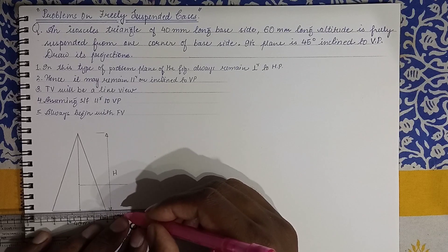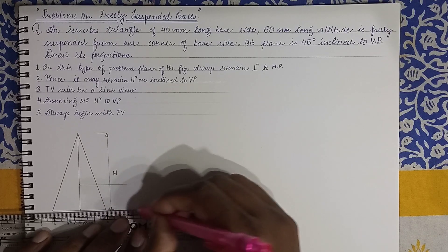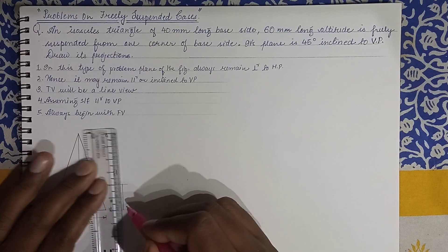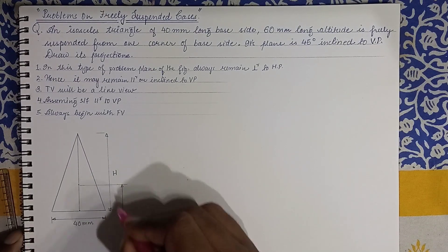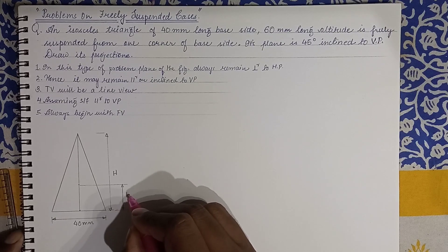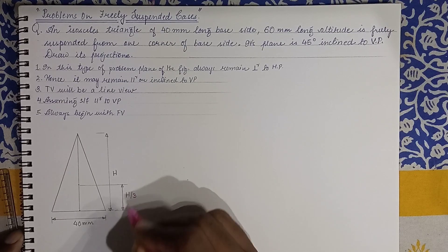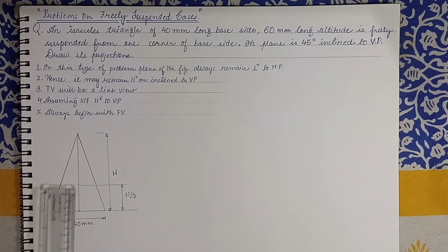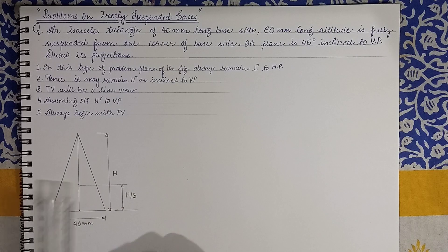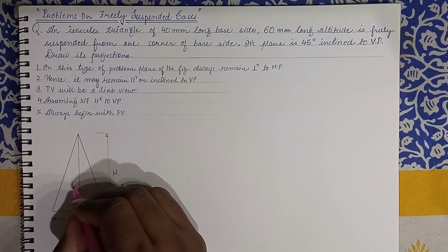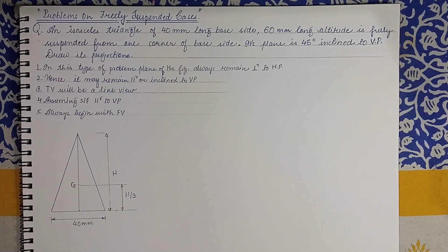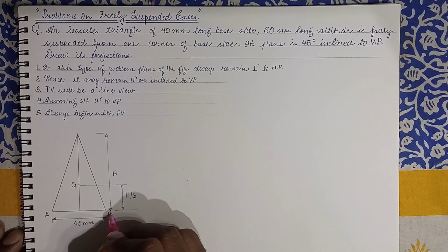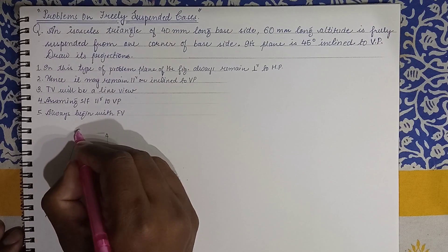If you have the altitude say h, so the centroid will be at a distance of h by 3. You need to keep this in mind—for any triangle it will be h by 3. So we have 60 as the altitude, 60 divided by 3 will give you 20. So at a distance of 20 we mark this point and we label this as capital G. Let us label the triangle—this is A, B, and this is C.